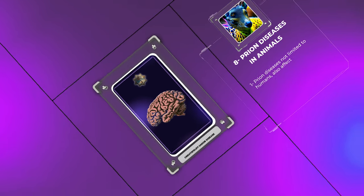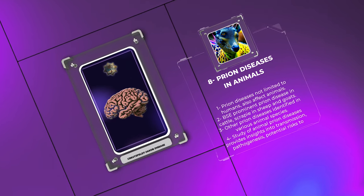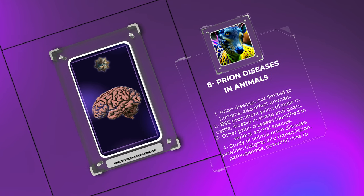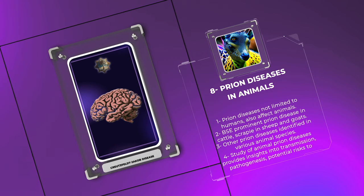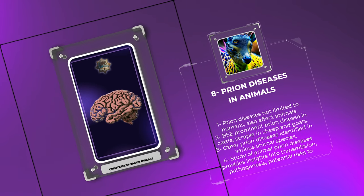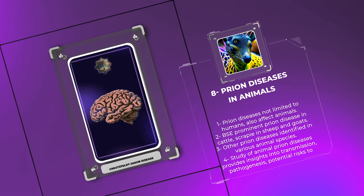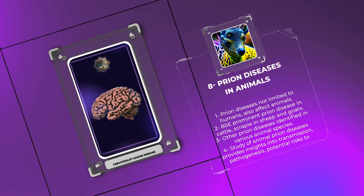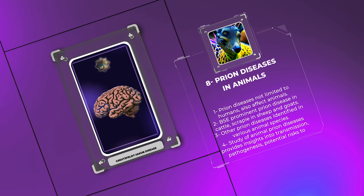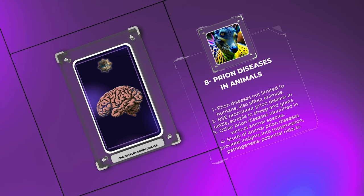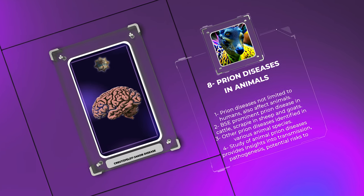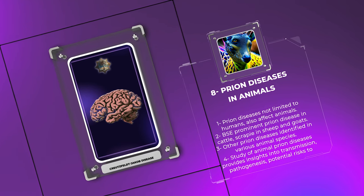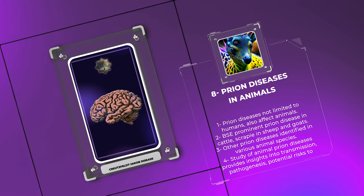Prion diseases are not limited to humans; they also affect animals. BSE is one of the most prominent prion diseases in animals, primarily affecting cattle. Ovine prion disease, also known as scrapie, is prevalent in sheep and goats. Additionally, several other prion diseases have been identified in various animal species, including chronic wasting disease (CWD) in cervids and feline spongiform encephalopathy in cats. The study of these animal prion diseases provides valuable insights into their transmission, pathogenesis, and potential risks to humans.